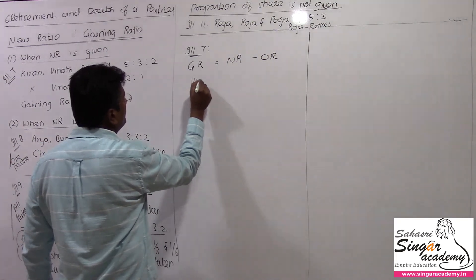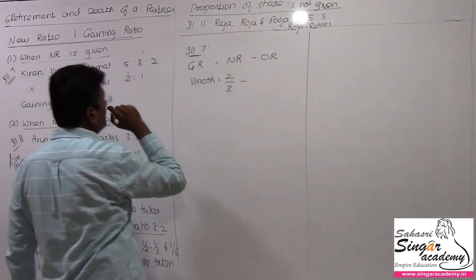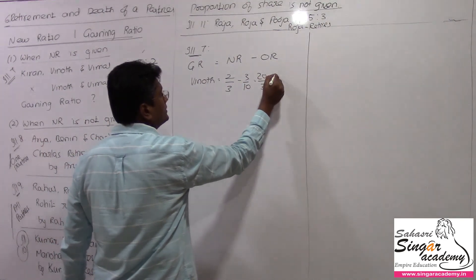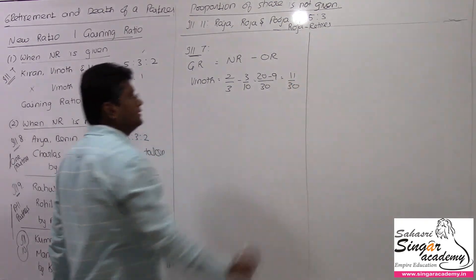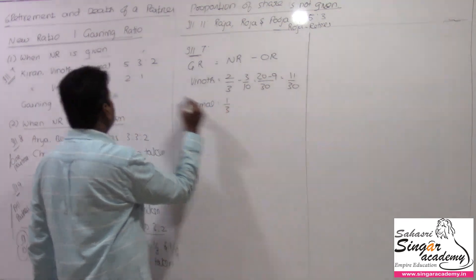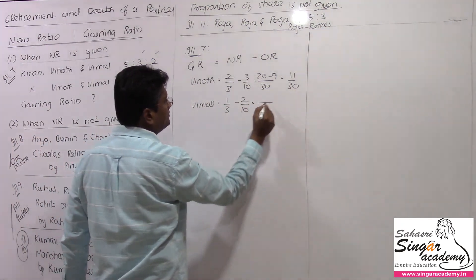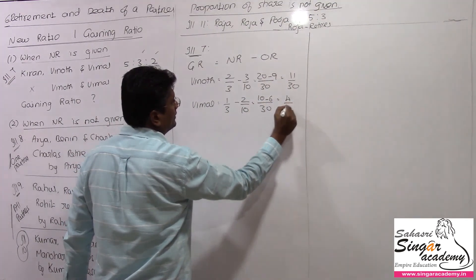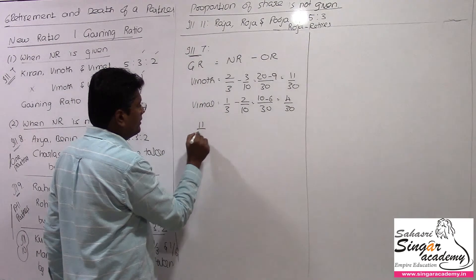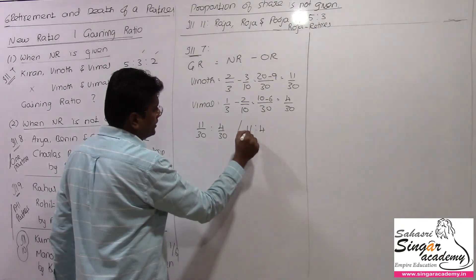Starting with Vinoth: new ratio is 2 by 3, old ratio is 3 by 10. Making denominator 30: 20 minus 9 = 11 by 30 is Vinoth's gain. For Vimal: new ratio is 1 by 3, old ratio is 2 by 10. Making denominator 30: 10 minus 6 = 4 by 30. So the gaining ratio is 11 by 30 to 4 by 30, or simply 11 is to 4.